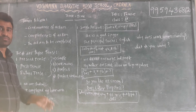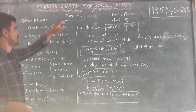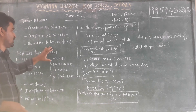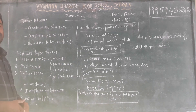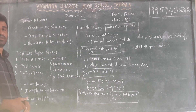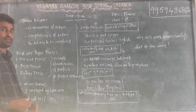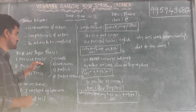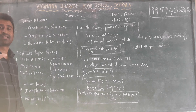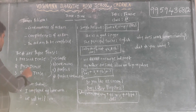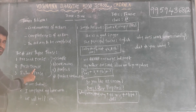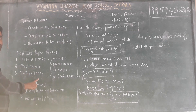Now, after knowing what tense tells us about, let us know how many types of tenses there are. There are three basic tenses: number one, present tense; number two, past tense; and number three, future tense.